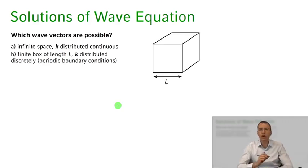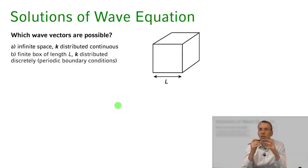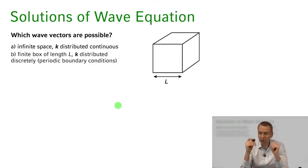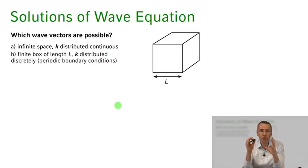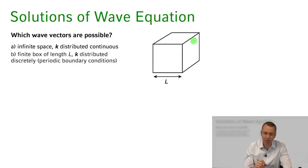Let's now introduce boundary conditions. For an infinite space, k vectors would be unrestricted and continuous. However, we confine the radiation field to a box and introduce periodic boundary conditions, requiring that the allowed field solutions are the same on the left and right, bottom and top, and front and back sides of the box.